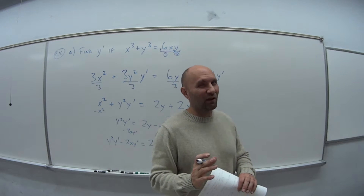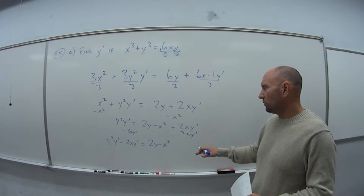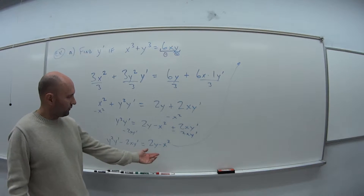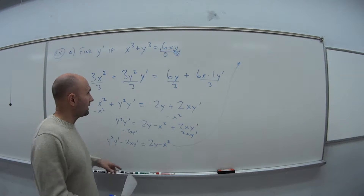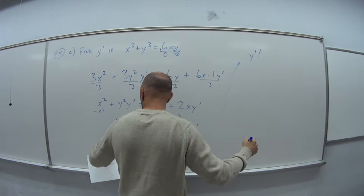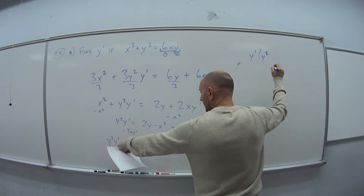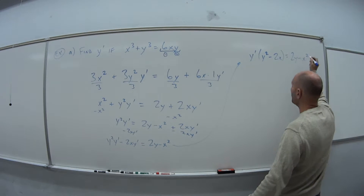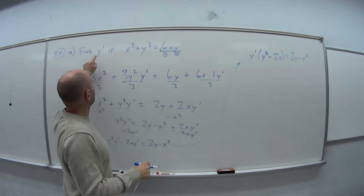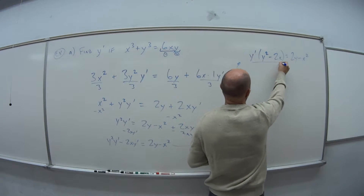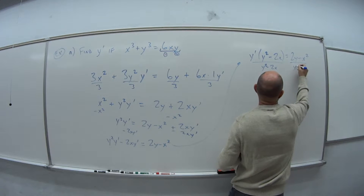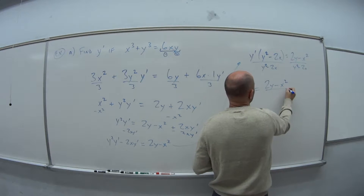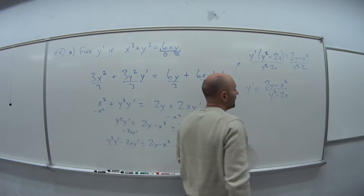It's not quite that messy, but we still have to be careful with what we're doing here. I'm going to come up here so I have more room. Now that I have all my y prime pieces on one side and non-y prime pieces on the other, I'm going to factor a y prime out of the left-hand side. So I'm left with y prime times (y squared minus 2x), and this equals 2y minus x squared. And now to get y prime by itself, I divide both sides by (y squared minus 2x). So y prime is equal to (2y minus x squared) all over (y squared minus 2x).